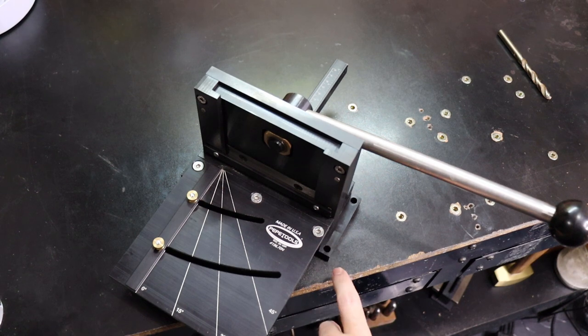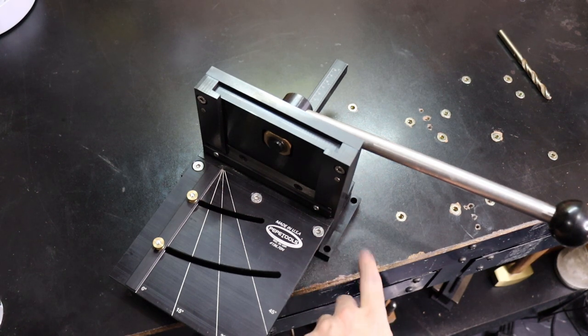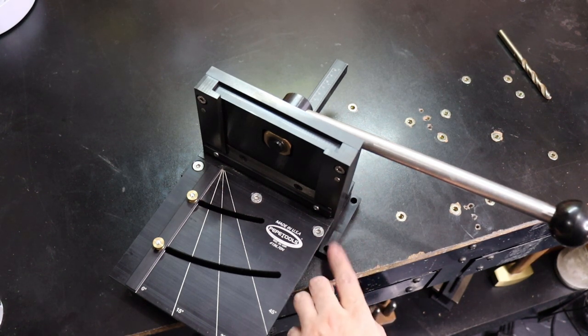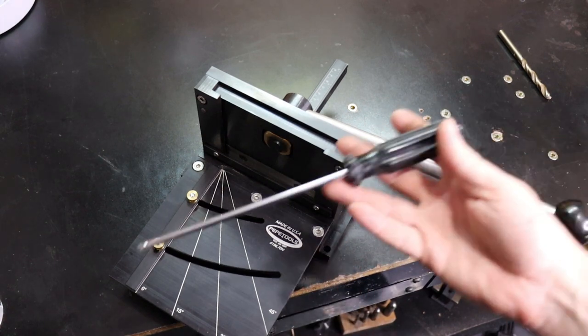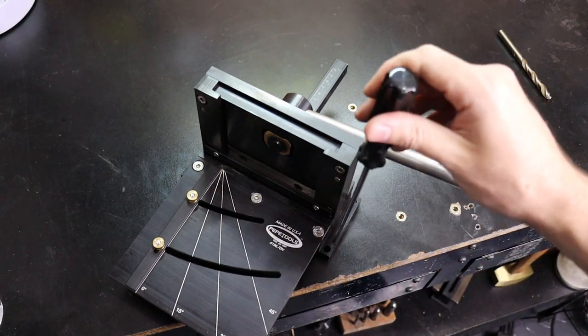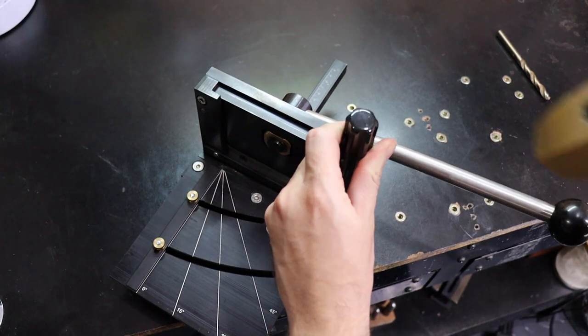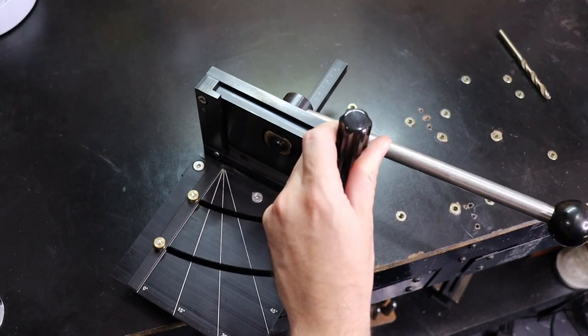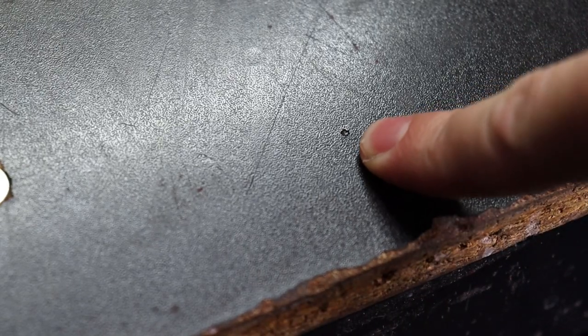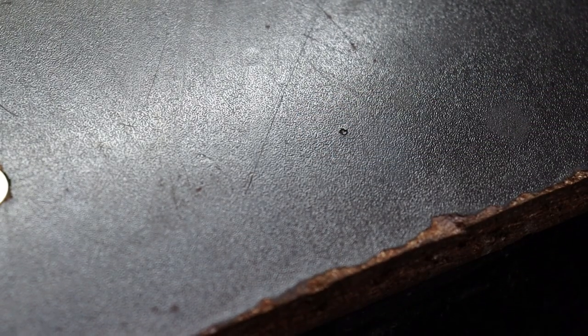To mark where your hole is going to be you should use a center punch that fits through the hole but I do not have one, all mine are too thick so I'm just going to use a screwdriver and just kind of line it up in the center of this and I'm just going to tap it with the hammer. That left a small dent in my table so I know exactly where I need to drill.